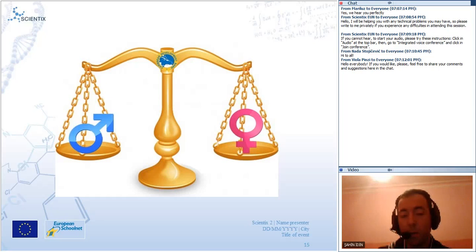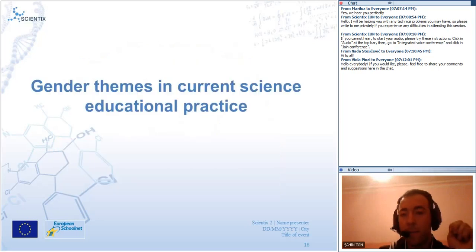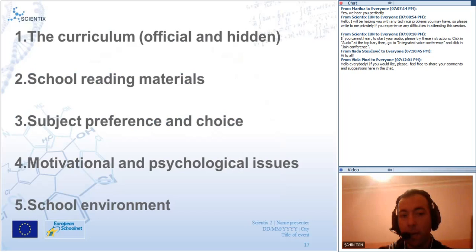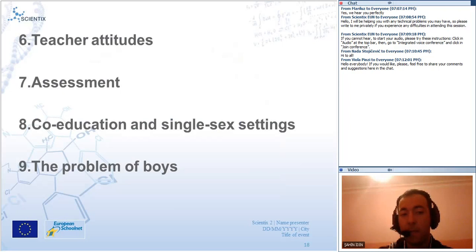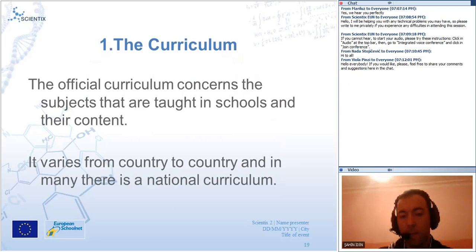We have nine themes in science educational practice in the scope of gender equity. The first one is curriculum — official and hidden curriculum. The second is school reading materials. The third is subject preference and choice. The fourth is motivational and psychological issues. The fifth is school environment. The sixth is teacher education. The seventh is assessment. The eighth is co-education and single sex settings. And the last one is the problem of boys.